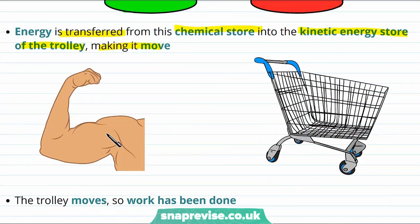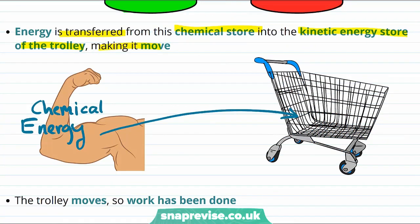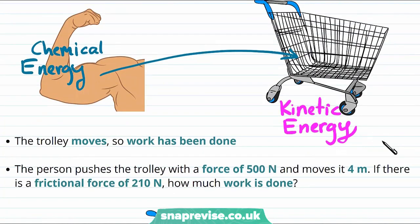So here we imagine the transfer from the chemical energy of our muscles into the kinetic energy of the trolley. Notice that the trolley is moving in particular in the direction of the force that we're exerting on it. So work is being done.